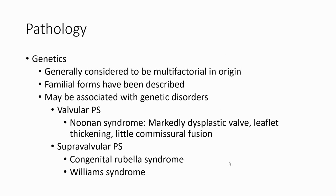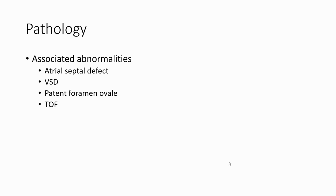Pulmonary stenosis is also related to genetics, generally considered to be multifactorial in origin. Familial forms have been described. It may be associated with genetic disorders like Alagille syndrome, Noonan syndrome, and may be associated with other abnormalities like atrial septal defect (ASD), patent foramen ovale, or tetralogy of Fallot.